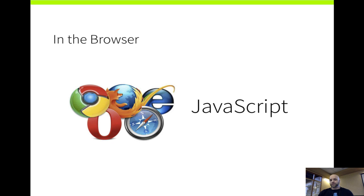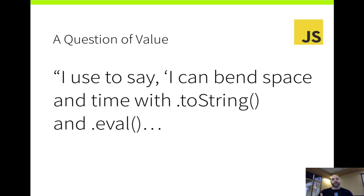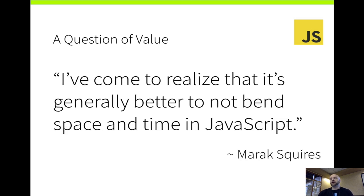In the context of the browser, we're not necessarily interested in the academic look at fluent interfaces — we want context as web developers. One thing I think people come to web development with is a question of the value of doing something like this. I like this quote: 'I used to say I can bend space and time with two string and eval, and I've come to realize that it's generally better not to bend space and time in JavaScript.' I'm not presenting this as a way to go and DSL everything — there needs to be a question of value, evaluating the complexity of this approach.